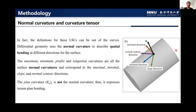In fact, the definition for these land surface curvatures can be unified. Differential geometry uses normal curvatures to describe the spatial bending in different directions for a surface. The maximum, minimum, profile, and tangential curvatures are all surface normal curvatures, and correspond to the maximum, minimum, slope, and normal contour directions.